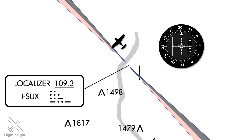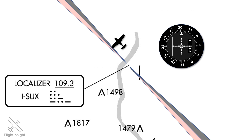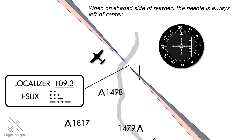It's when we reach the antenna that the flag flips from 'to' to 'from.' We're now picking up the back course transmission. As we continue to fly out, the needle stays on the left side of center. If there's one thing you remember about localizers and VORs in general, it's that the indication on the receiver stays the same regardless of aircraft heading. We can spin around in circles, and as long as we stay in this position on this side of the feather, the indication won't change. The needle has remained on the left side throughout. As long as we're on the shaded side of the feather — whether on the back course or front course — the needle will be off to the left. On the non-shaded side, the needle will always be to the right, totally independent of aircraft heading.